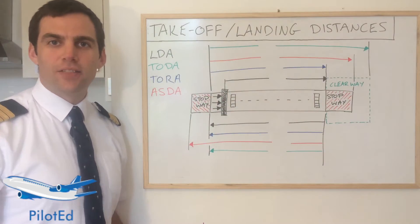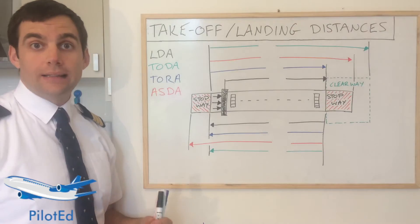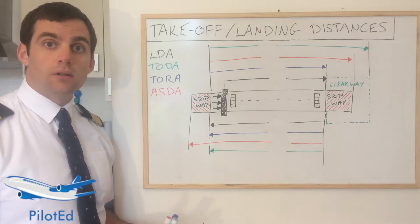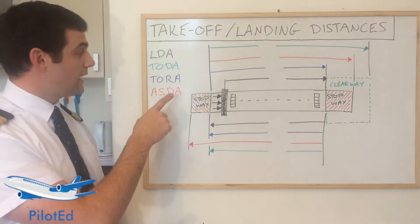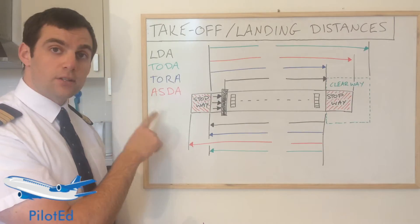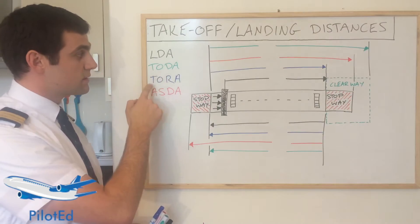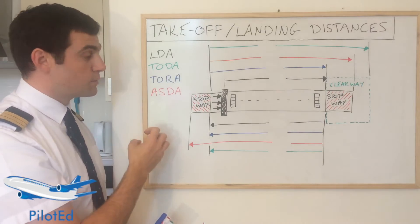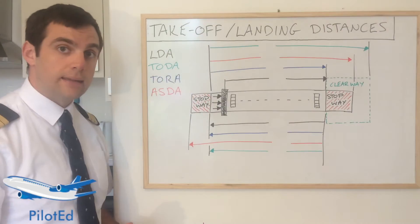Welcome to ATPL Theory. Today we're talking about takeoff and landing distances and declared distances. These terms appear in exams and in daily operations. They stand for Landing Distance Available, Takeoff Distance Available, Takeoff Run Available, and Accelerate Stop Distance Available. These should not be confused with the landing distance, takeoff distance, takeoff run, and accelerate stop distance, which should of course be lower once we do our performance calculations than what is available — the versions with 'A' at the end.